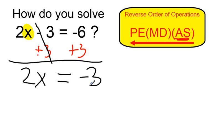which is just negative 3. And moving to the left in my order of operations, multiplication and division would come next. So 2x means 2 times x. Therefore, to undo it, I divide by 2.